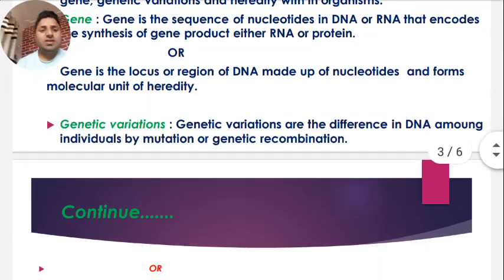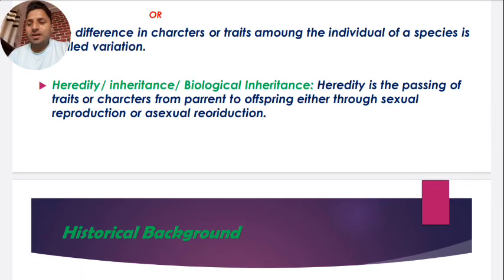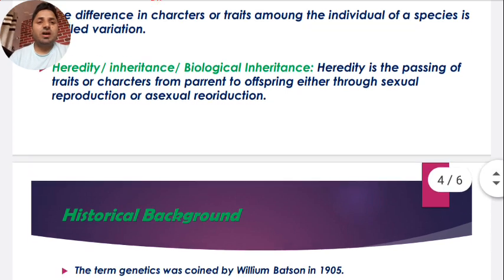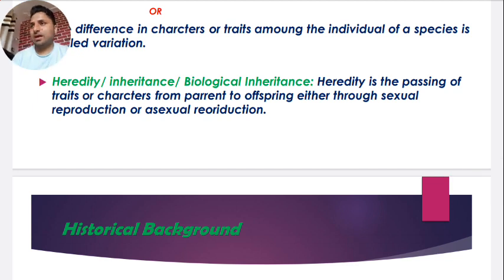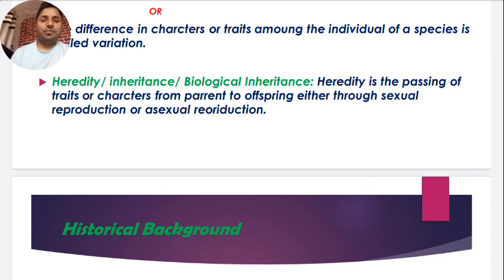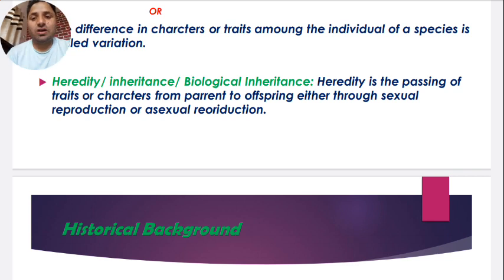The third concept is heredity. When we talk about heredity, inheritance, or biological inheritance, we are talking about the passing of traits or characters from parents to offspring — by sexual reproduction or asexual reproduction. Here, I want you to first understand that characters and traits are two different things.